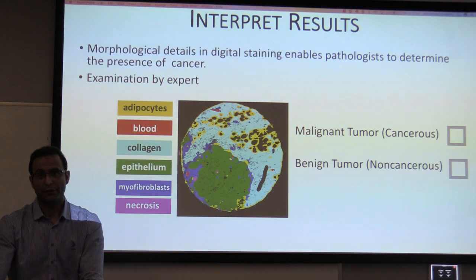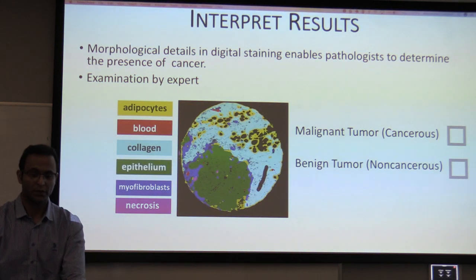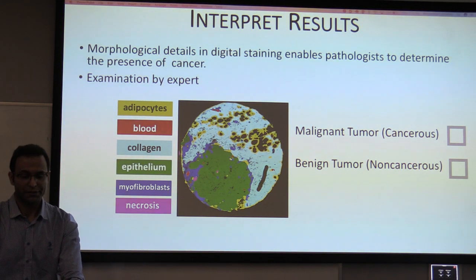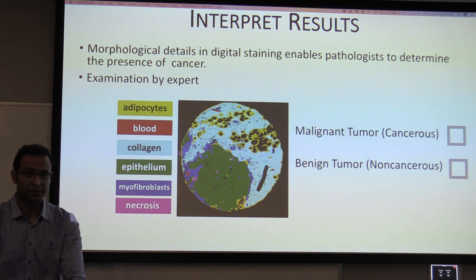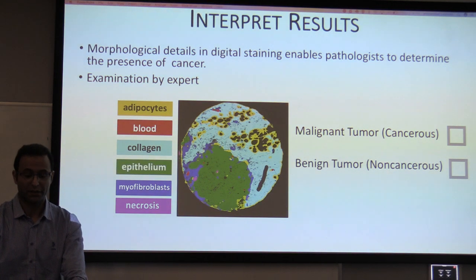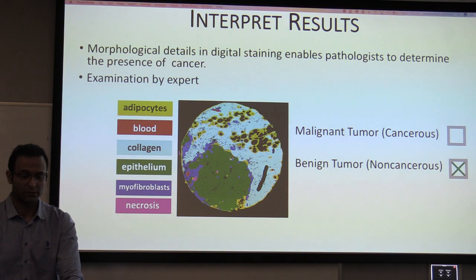After the digital staining, the morphological details in digital staining enable pathologists to determine the presence of cancer. By examination by an expert, it can be determined if the tumor is a cancerous tumor or a non-cancerous tumor.